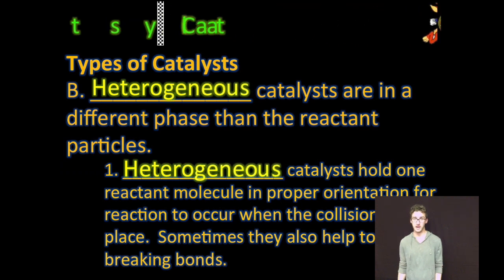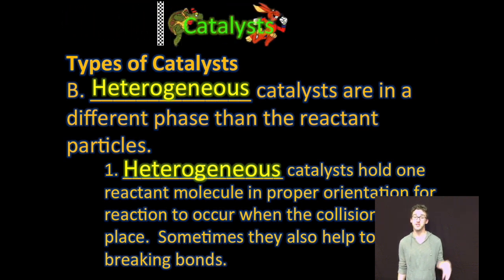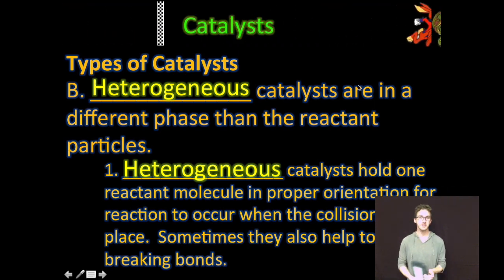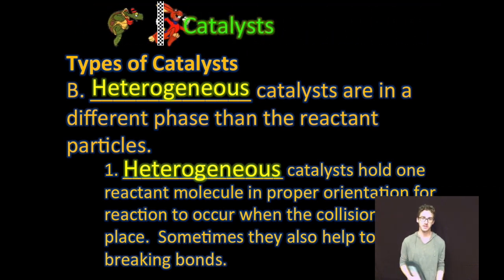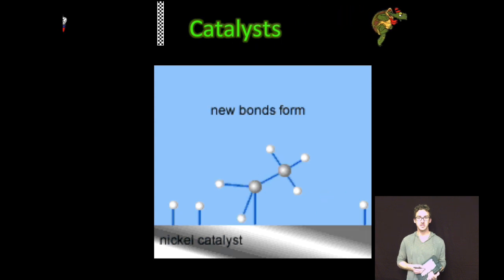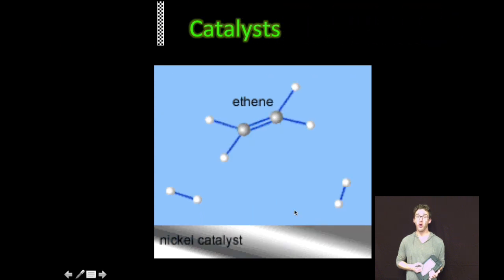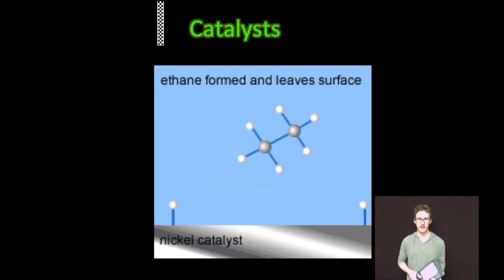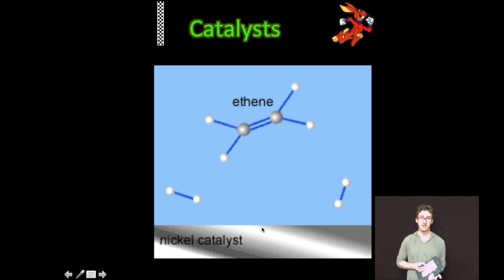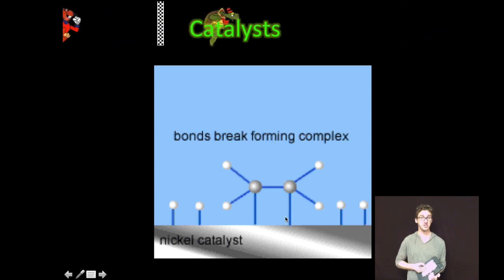Heterogeneous catalyst, on the other hand, is one in which the catalyst is in a different phase than the reactant particles. Heterogeneous catalysts will often hold a reactant molecule in its proper orientation so that the reaction can occur more quickly. Sometimes they also speed up the reaction by helping to break bonds. Take a look at this animation that's going to repeat on your screen. Your catalyst is this solid nickel. Ethene and hydrogen adsorb to it, again sort of holding those reactant molecules in place, allowing for the reaction to occur at a faster rate, faster than it would without that solid nickel catalyst. But again, heterogeneous, because the reactants are in the gas phase, the catalyst is in the solid phase.